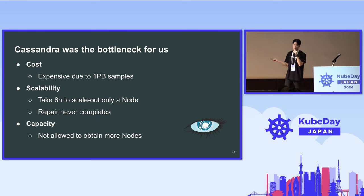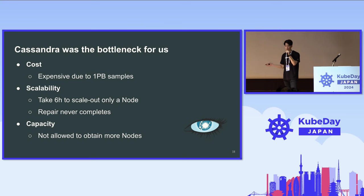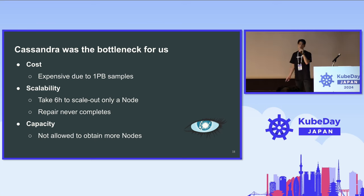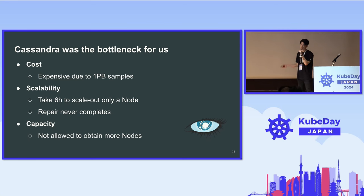This means Cassandra is the bottleneck for our use cases. Cassandra is a great product in most use cases, but for time series data it is a bottleneck. We see three issues: cost, scalability, and capacity. We are forced to use private cloud services instead of AWS or GCP, so there is no managed service for Cassandra — you need to provision physical or virtual machines yourself.